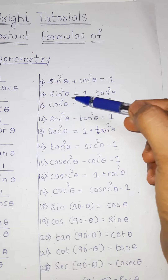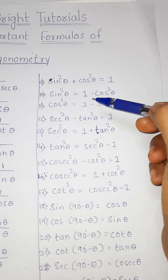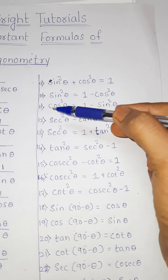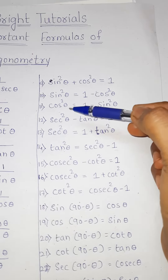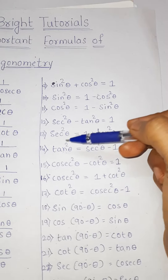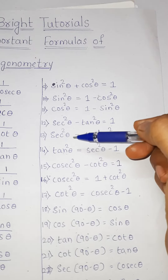Tenth one: sin square theta is equal to 1 minus cos square theta. Eleventh one: cos square theta is equal to 1 minus sin square theta. Twelfth one: sec square theta minus tan square theta is equal to 1.